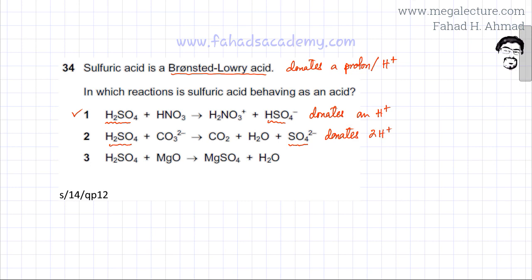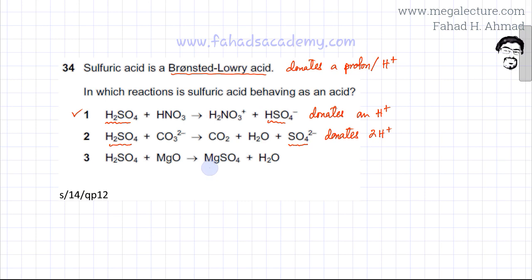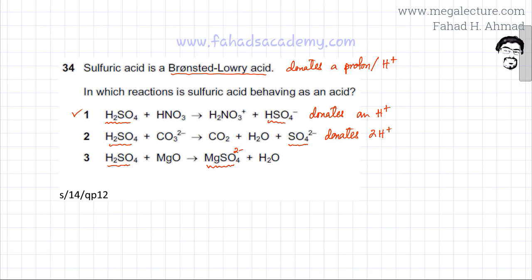In the third option, you again start with H₂SO₄, and on the other side you have SO₄²⁻. The salt MgSO₄ contains the SO₄²⁻ ion, which means that sulfuric acid again lost an H⁺ ion.